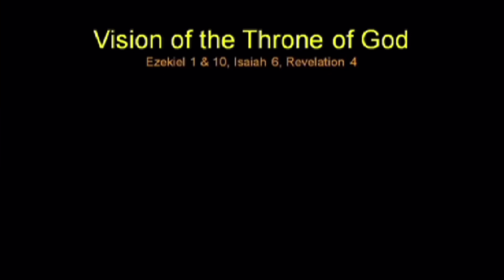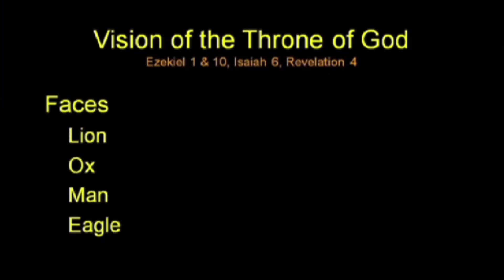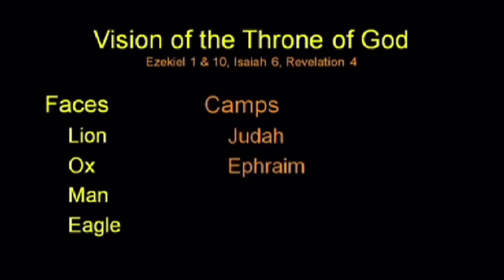Vision of the throne of God. We have four faces: lion, ox, man, and eagle. We'll discover the camp of Israel, when laid out, would organize itself around four camps. One was the camp of Judah, one was the camp of Ephraim, one was the camp of Reuben, and one was the camp of Dan. All 12 tribes clustered, three each, into those four camps.